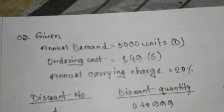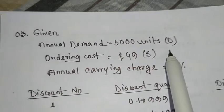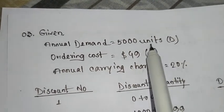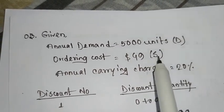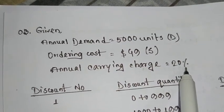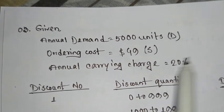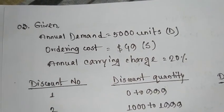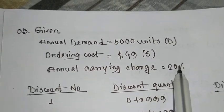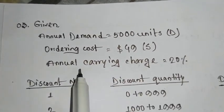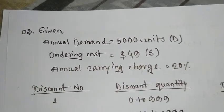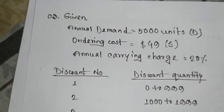Here we have a few data: annual demand is 5000 units, ordering cost is $49, which is the setup cost. The annual carrying charge is 20%, and the unit cost is also given.